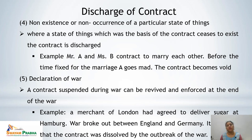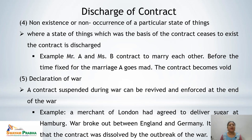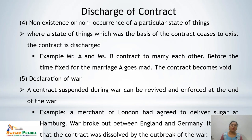Fifth cause is declaration of war. If any kind of war is declared between two countries and the parties are from those two countries, it will automatically lead to discharge of contract. However, during the war, for the time being, the contract can be suspended till the war is over, and once the war is over, the contract can be revived and enforced. For example, a merchant of London agreed to deliver sugar at Hamburg; war broke out between England and Germany and the contract was dissolved by the outbreak of war.